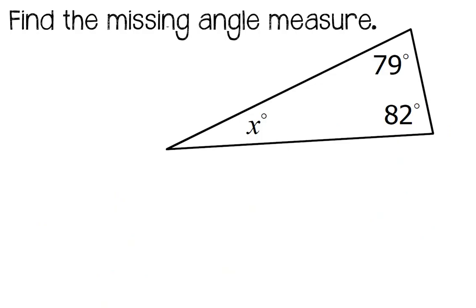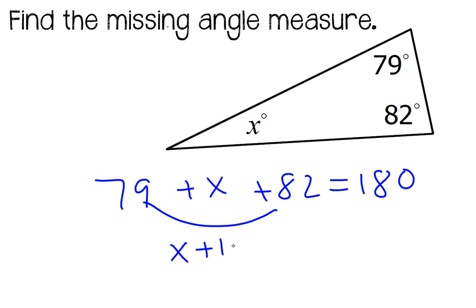All right, a few more to go. Remember, when you're setting up your algebra here, it doesn't matter which order you put these three angles in. The x can be first, it can be second, or it can be last. But it always sums to 180 degrees. Don't forget to combine your like terms. And then don't forget to use an inverse property. And that's how you'll find your missing angle measure.